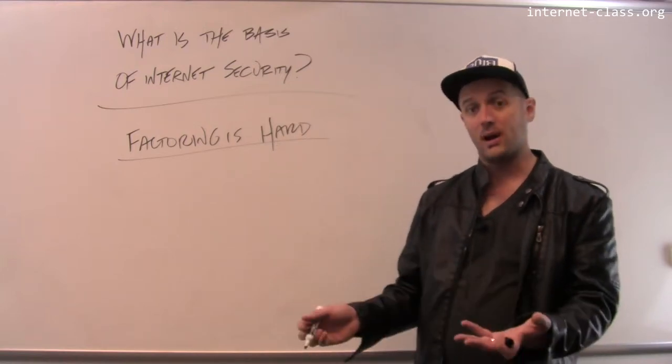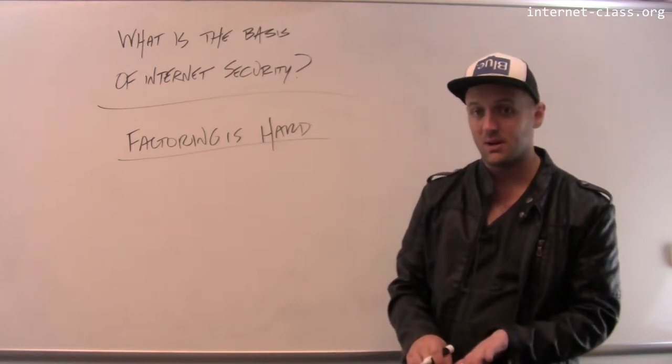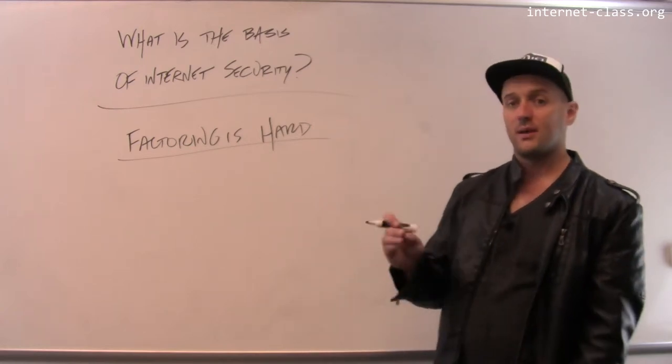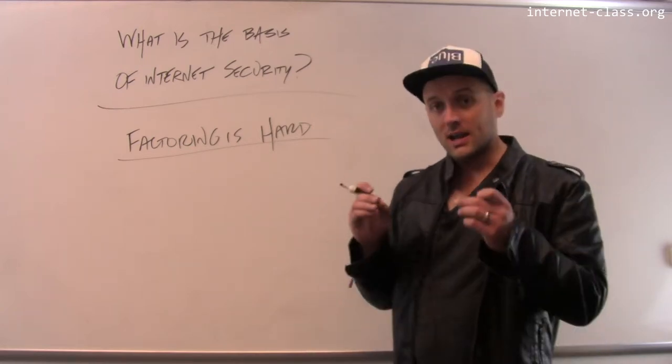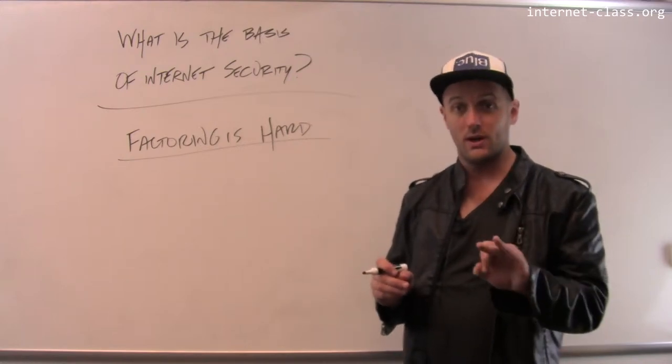Seven is a prime number, eleven is a prime number, thirteen is a prime number, seventeen is a prime number. These are all examples of numbers that can only be divided evenly by themselves and one.